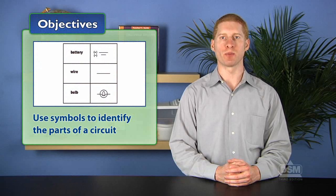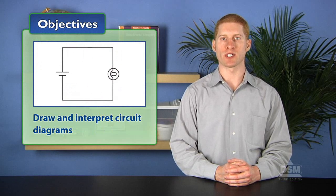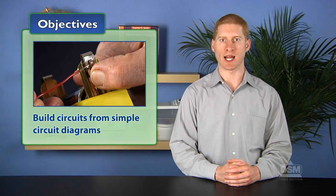In Activity 2, Electrical Symbols, students learn to use symbols to identify the parts of a circuit. They first draw and interpret circuit diagrams, then build circuits from simple circuit diagrams.